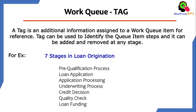So the first time, at this first step, the Prequalification Process tag will be assigned to that Application Number. Now once it moves to the Loan Application part, that item's stage will be Loan Application. You have multiple stages; every time based on the step — let's say the Prequalification Process is completed — you will remove that tag, go to Loan Application, and add this tag to the specific Application Number, the specific Queue Item.